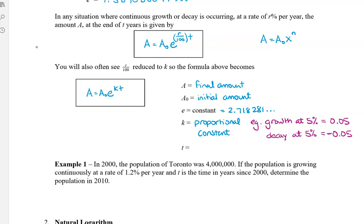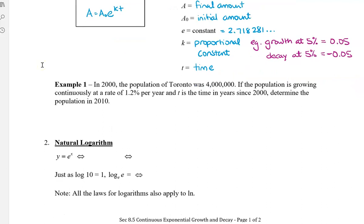And then the last thing t is our time. So let's take a look at an example. In 2000 the population of Toronto was 4 million. If the population is growing continuously, and this is how you know, whenever you see this word continuously in the problem you know you're going to use this formula with e.